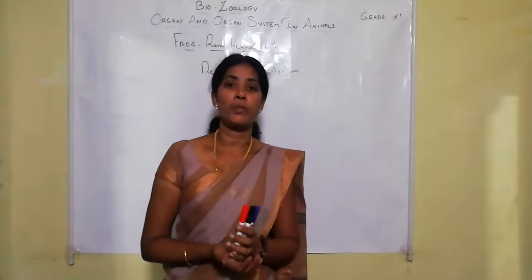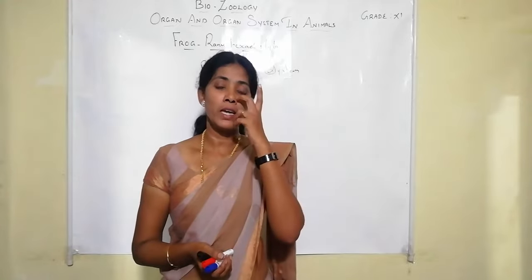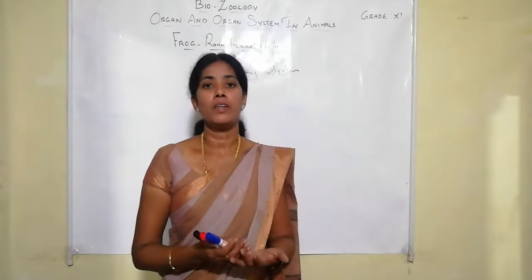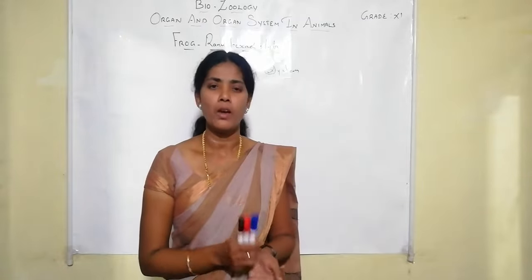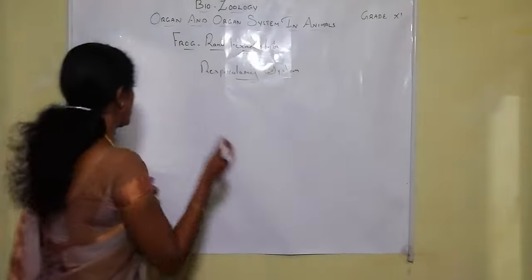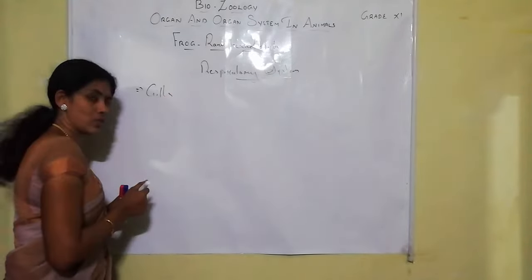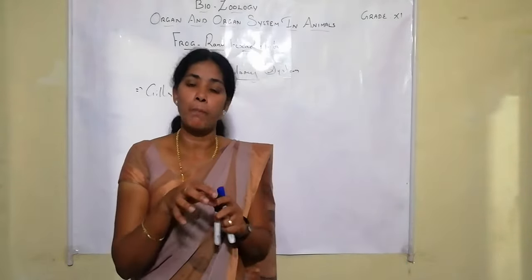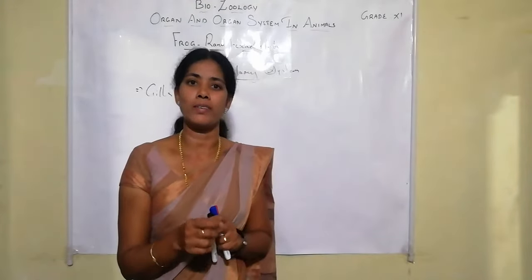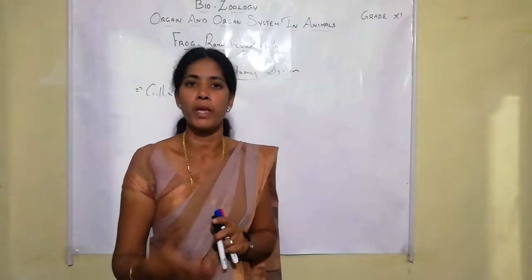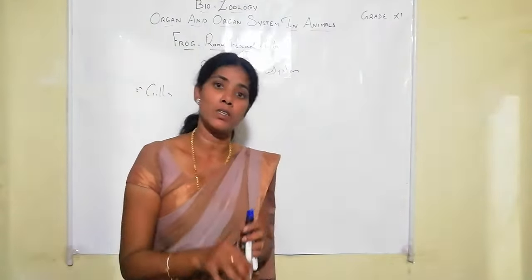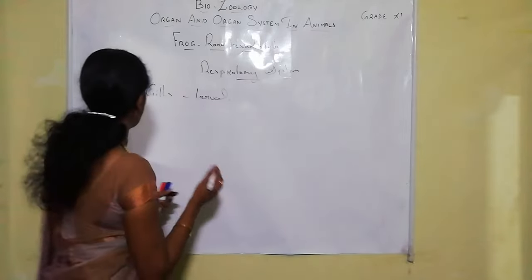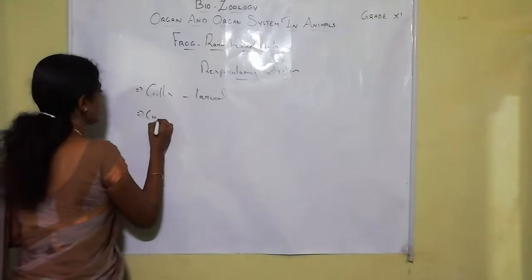Now let us discuss the respiratory system. Since the frog is an amphibian living both in water and on land, it uses various organs for respiration. The first method is gill respiration. During the larval stage — the tadpole — the frog lives completely in water, and at this stage it breathes using gills.